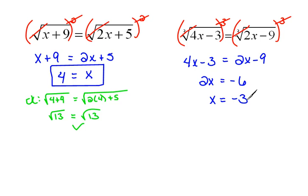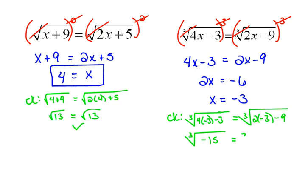Now we have to check it and make sure that this works. I know you're going to get tired of checking everyone, but the minute that you don't, you'll have an extraneous answer. So if we check this one, this would be the cube root of 4 times negative 3 minus 3 is supposed to equal the cube root of 2 times negative 3 minus 9. So here we have the cube root of 4 times negative 3 would be negative 12 minus 3 would be negative 15 equals. Here we would have the cube root of 2 times negative 3 would be negative 6 minus 9 is negative 15.